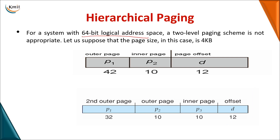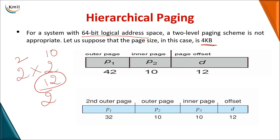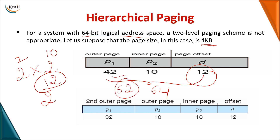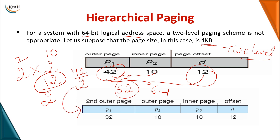Now consider a 64-bit logical address with a 4 KB page size (2^12), so 12 bits are used for displacement, leaving 52 bits. Splitting 52 as 42 and 10 for two-level paging doesn't work because 2^42 entries is too large. So we break it further into three-level paging.